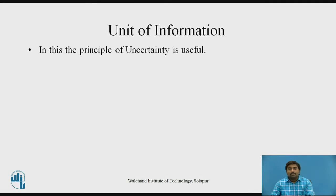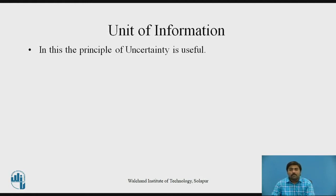The basic principle which helps for measurement of information is uncertainty — the unpredictability of event occurrence. For example, when you throw a dice, there are 6 outcomes, but you can't confirm which will be the outcome — whether it is 1, 2, 3, 4, 5, or 6. There is an unpredictable output, and that helps to find the amount of information in communication.